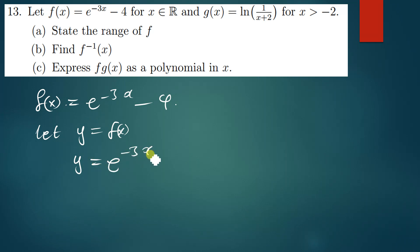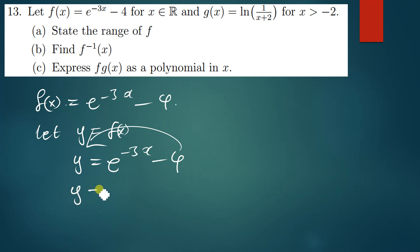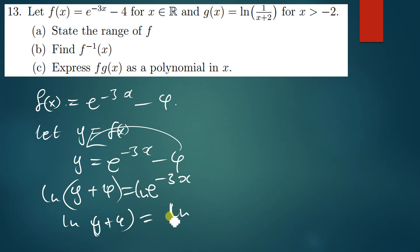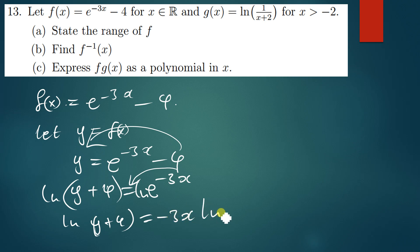We move the 4 to the other side so that we get y plus 4 equals e to the power negative 3x. Then to make x the subject, we introduce ln on both sides so that we have ln(y + 4) equals negative 3x, because the power negative 3x drops down according to the rules of logarithms.